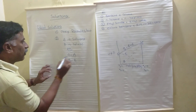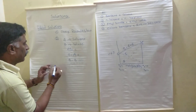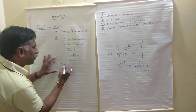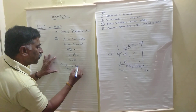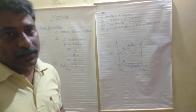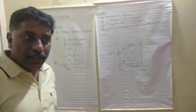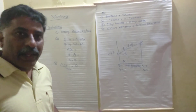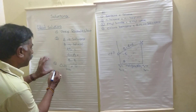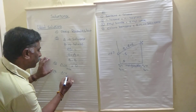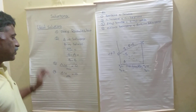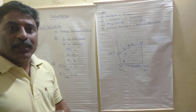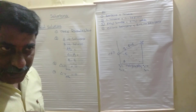In the formation of an ideal solution, delta H mix is equal to 0. Delta H means change in enthalpy — there is no change in enthalpy for an ideal solution. Similarly, delta V for a mixture is equal to 0, meaning there is no change in volume either.